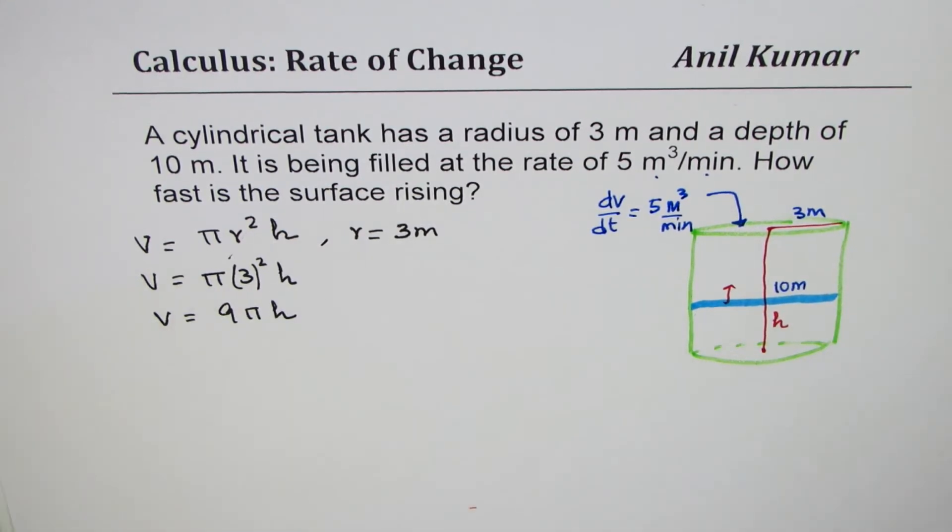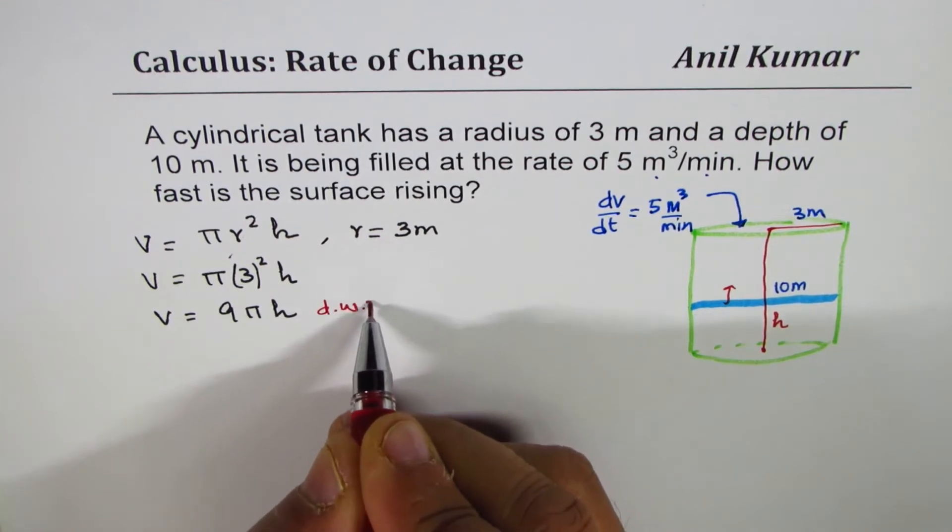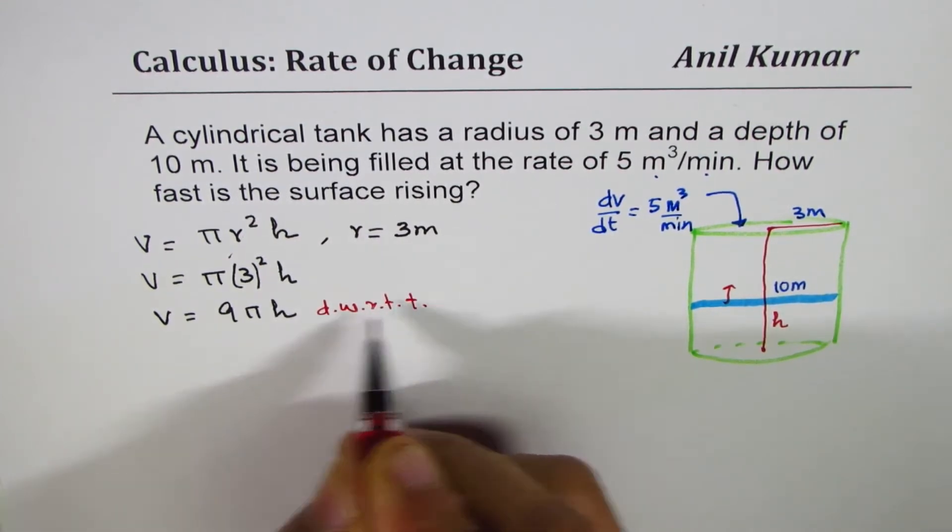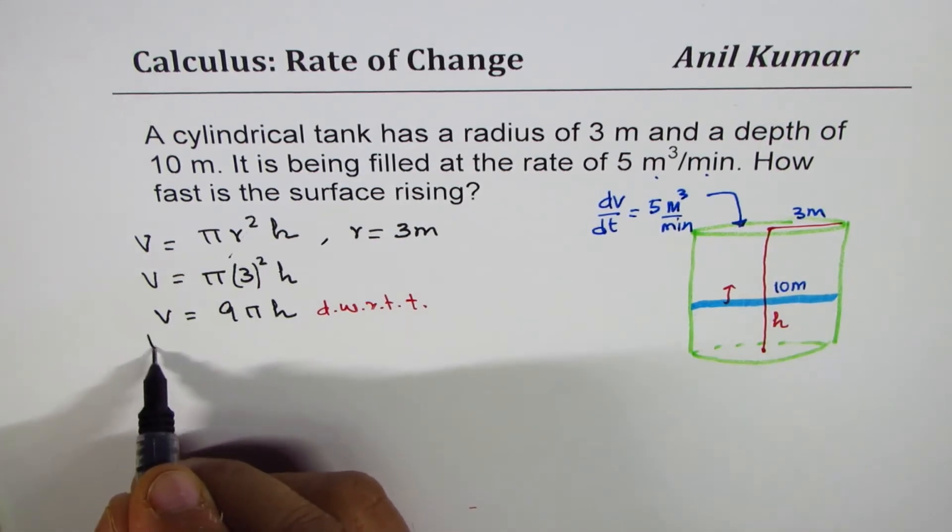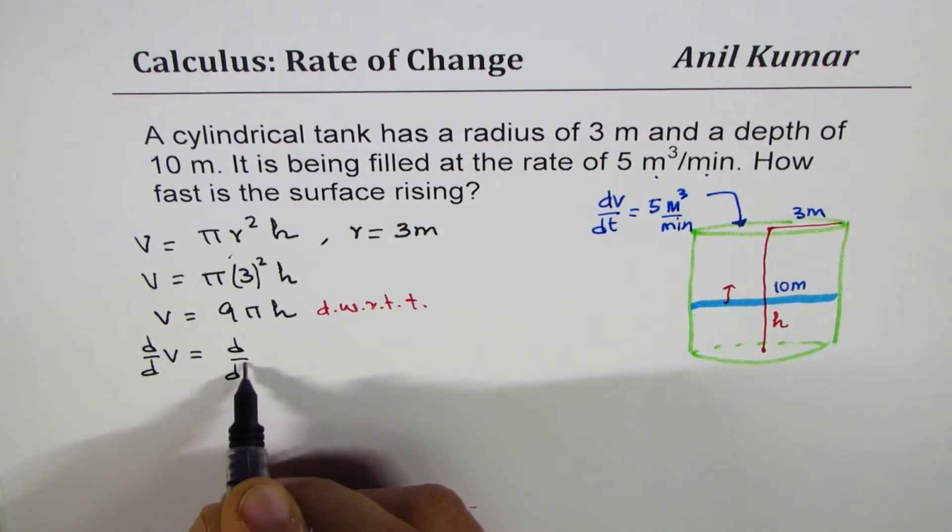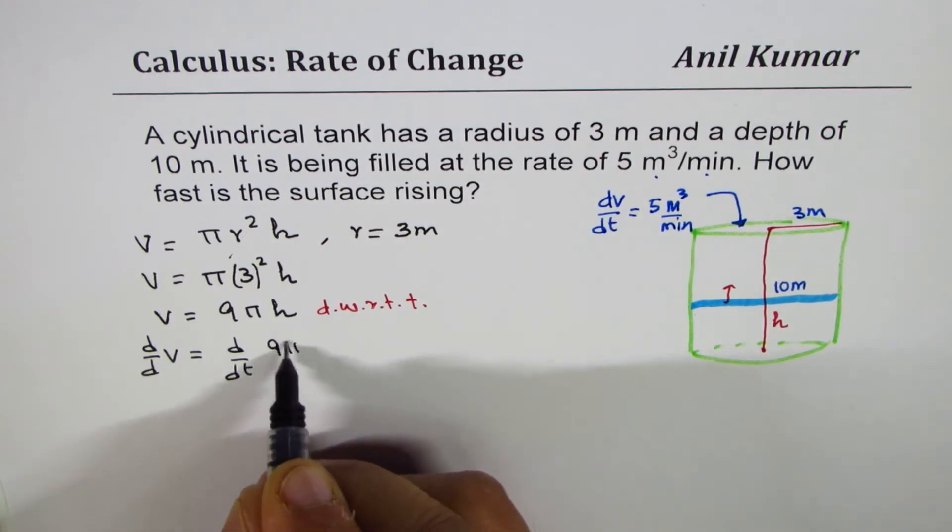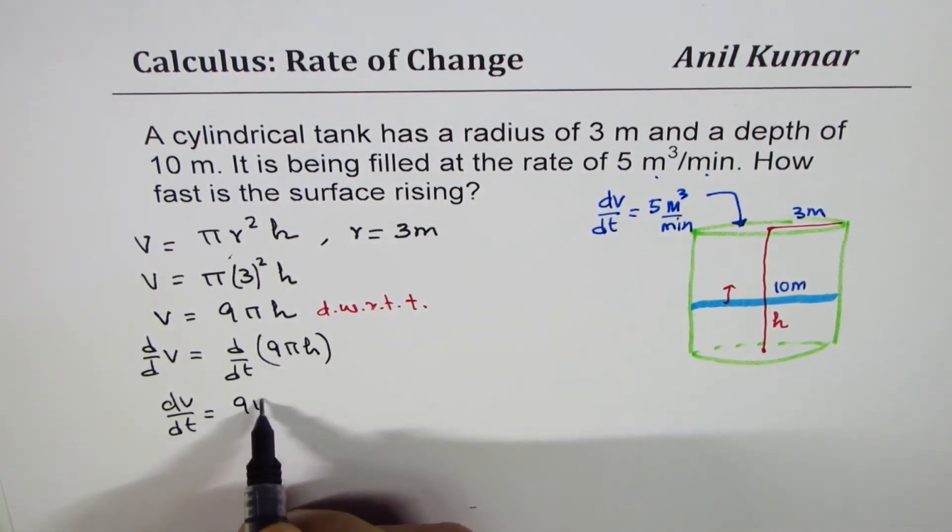We can differentiate both sides with respect to time, and that is implicit differentiation. So we get d/dt of volume equals d/dt of 9πh. That is dV/dt equals 9π times dh/dt, since 9π is constant.